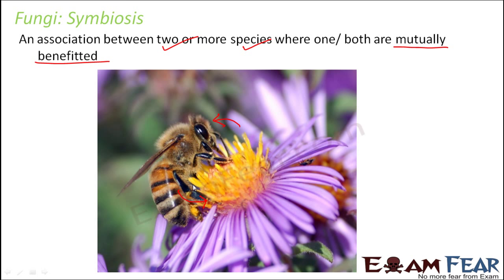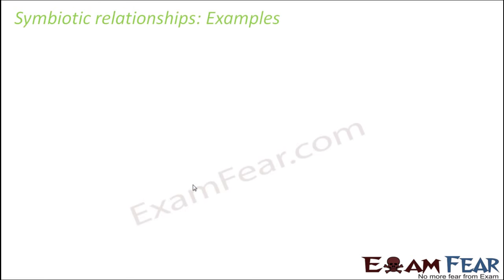Pollination is a step in the process of sexual reproduction of plants. This bee helps in the process of pollination and that's how it helps in sexual reproduction of flowers. So in this case, both the bee as well as the flower are getting benefited. This is an example of symbiosis.